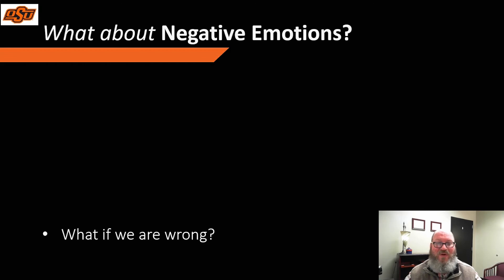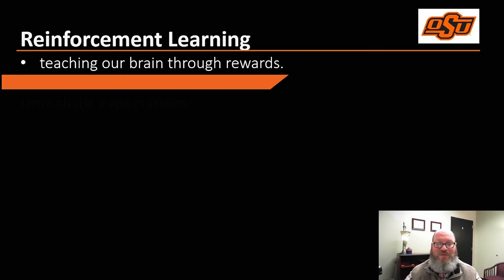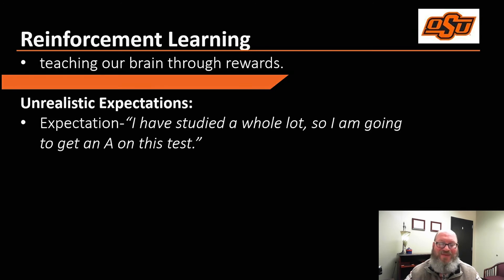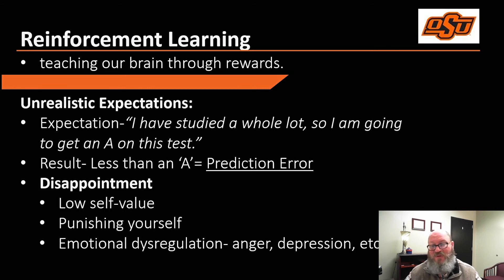So essentially, we like routine and we like to be right. But what if we are wrong? The relationship between dopamine and the reward prediction error — or getting something for your brain figuring stuff out — is called reinforcement learning. You can think of this as teaching our brain through rewards or incentives. When we create an expectation, such as, "I've studied a whole lot, so I'm going to get an A on this test" — that's what we expect. And if the result is less than an A, that's the error. The brain then responds with a flood of neurotransmitters that create the subsequent emotional response, which could be called dysregulation or disappointment, because what we predicted did not occur.